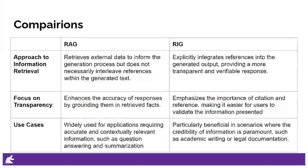We can compare RAG and RIG in three aspects: approach to information retrieval, focus on transparency, and use cases. In approach to information retrieval, RAG retrieves external data to inform the generation process but does not necessarily interleave references within the generated text. RIG explicitly integrates references into the generated output, providing a more transparent and verifiable response. In terms of transparency, RAG enhances the accuracy of responses by grounding them in retrieved facts, while RIG emphasizes citation and reference, making it easier for users to validate the information presented. In use cases, RAG is widely used for applications requiring accurate and contextually relevant information, such as question answering and summarization. RIG is particularly beneficial in scenarios where the credibility of information is paramount, such as academic writing or legal documentation.